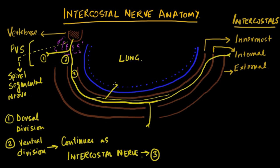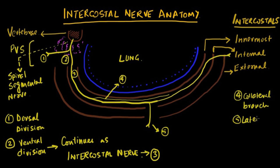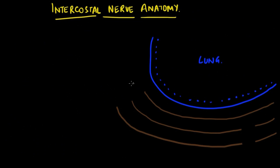It's important to recognize that the intercostal nerve, at the angle of the rib, lies between the internal and the innermost intercostal muscle. In the main intercostal space it gives a small collateral branch as it goes along. At the mid-axillary line it gives a lateral branch, and the main part of the intercostal nerve continues forward to give an anterior branch as well.